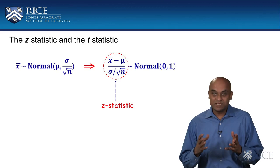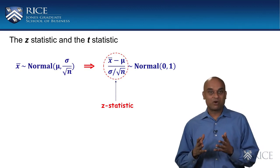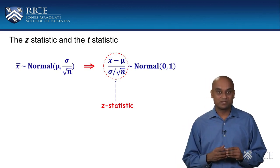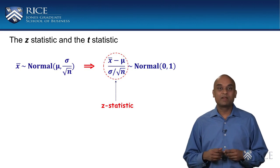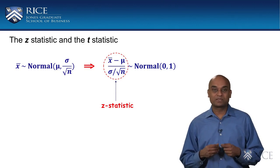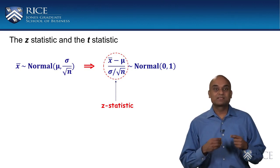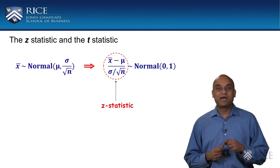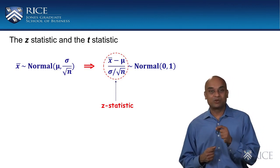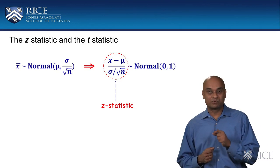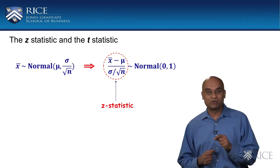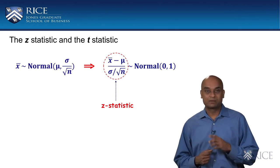So, a Z-statistic in the context of a population and a sample from that population, where we are interested in inferring something about the population mean, is calculated as shown. This Z-statistic has a standard normal distribution — that is, a normal distribution with mean 0 and standard deviation 1.